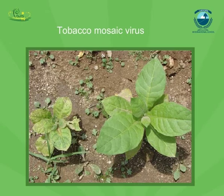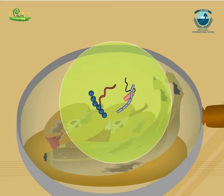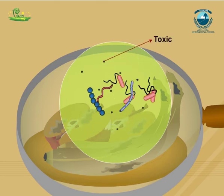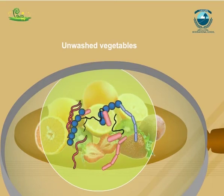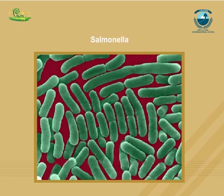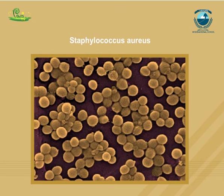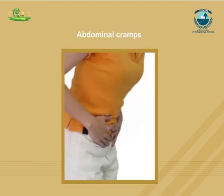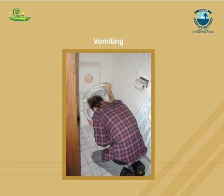Food poisoning could be due to the consumption of food spoilt by microorganisms. Microorganisms that grow on our food sometimes produce toxic substances, making the food poisonous and causing serious illness and even death. Foods from animals, raw foods, and unwashed vegetables can all contain germs that cause food poisoning. The most common food poisoning bacteria are Salmonella, E. coli, Clostridium botulinum, and Staphylococcus aureus. Symptoms include abdominal cramps, fever, diarrhea, and vomiting.